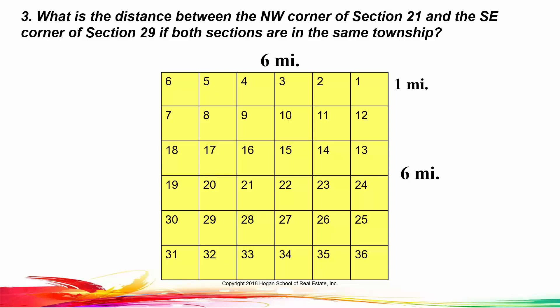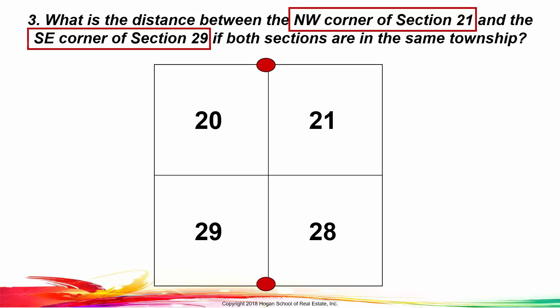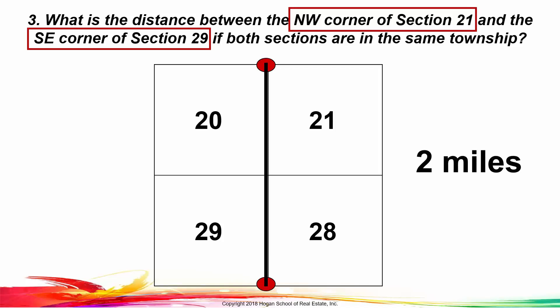Keep in mind that each section is 1 mile by 1 mile. This problem tells us we're working in section 21 and section 29, so actually in this four-section box. I'm going to blow that up. Each of these sections is 1 mile by 1 mile. The question asks what's the distance between the northwest corner of section 21 — that's right there — and the southeast corner of section 29. That's the southeast corner of section 29, and the distance between them is 2 miles. Each section is a mile by a mile, so the distance between those two points is 2 miles.